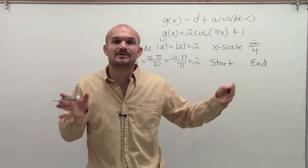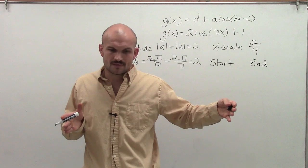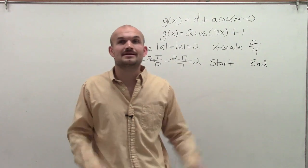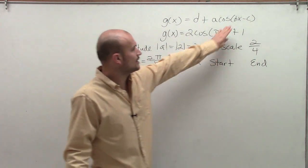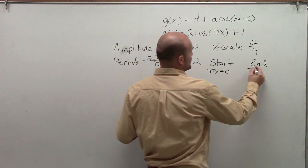And the reason why we do that is because the parent graph of cosine starts at 0 and ends at 2 pi. So here, my transformations are going to be pi x equals 0. And over here, I have pi x equals 2 pi.